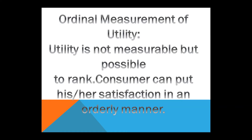Now let's look at ordinal measurement of utility. Utility is not measurable, but it is possible to rank. A consumer can put their satisfaction in an orderly manner — for example, Good A provides more utility than Good B, and Good B provides more utility than Good C, and so on.